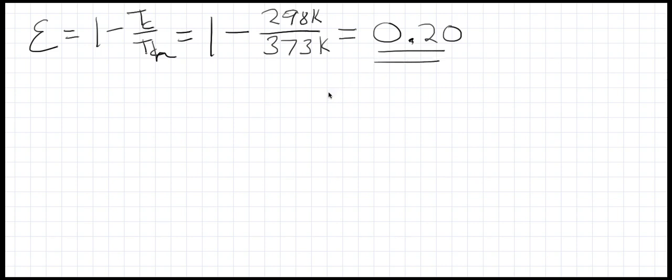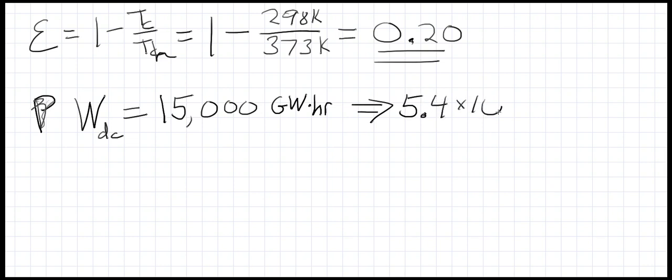That means if we put in a hundred joules of heat we only get 20 joules of work out. Now let's look at the amount of power we need. The amount of work we required is equal to one Diablo Canyon, and that amount of work generated by those electrical turbines in Diablo is about 15,000 gigawatt hours. You can convert that to joules, and that comes up to 5.4 times 10 to the 16th joules.